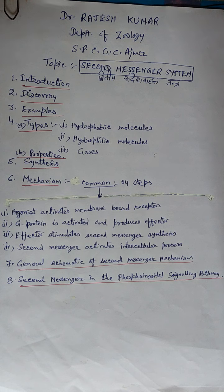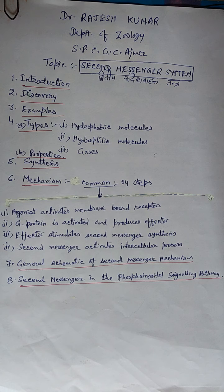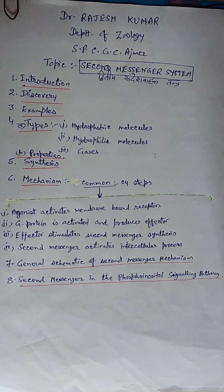An important feature of the second messenger signaling system is that second messengers may be coupled downstream to multi-cyclic kinase cascades to greatly amplify the strength of the original first messenger signals. For example, Ras GTP (guanosine triphosphate) signals linked with the mitogen-activated protein kinase (MAPK) cascades amplify the allosteric activation of proliferative transcription factors such as CREB and MYC.